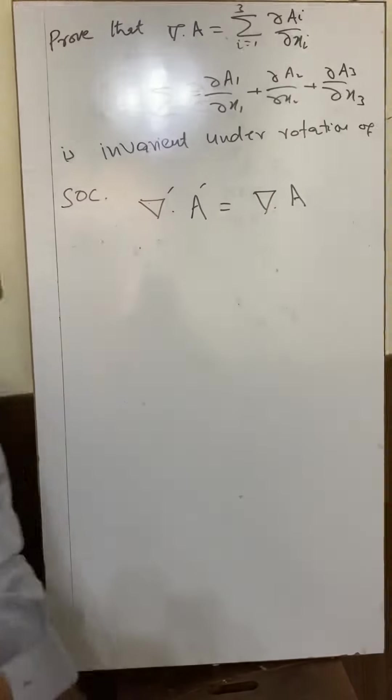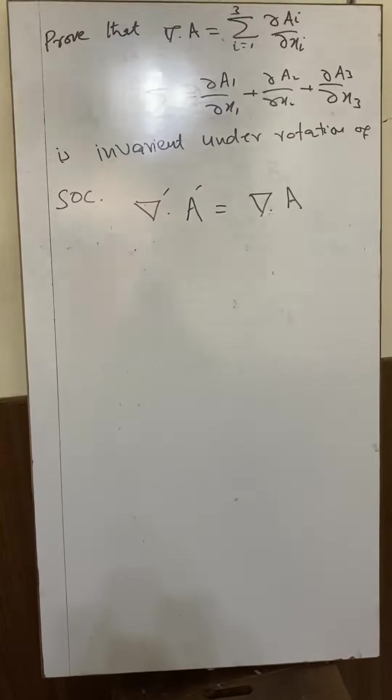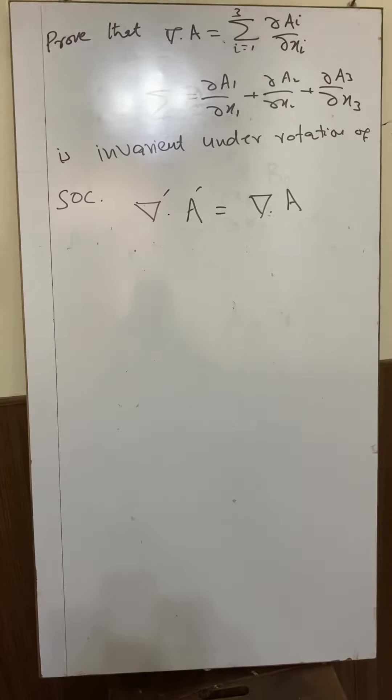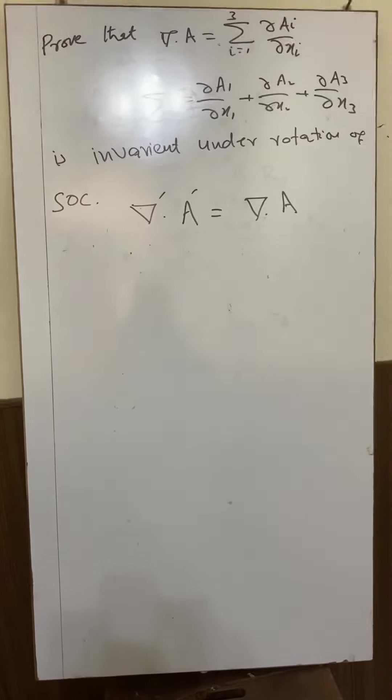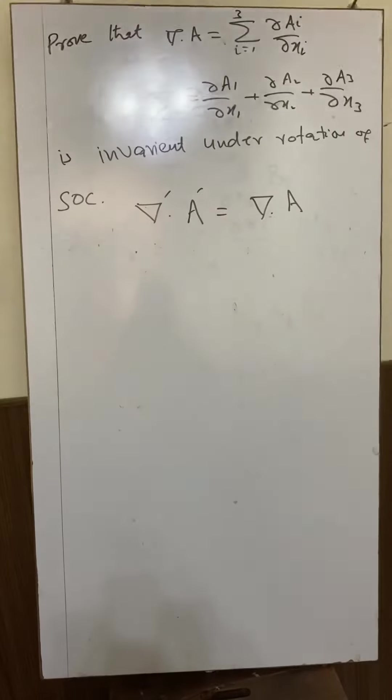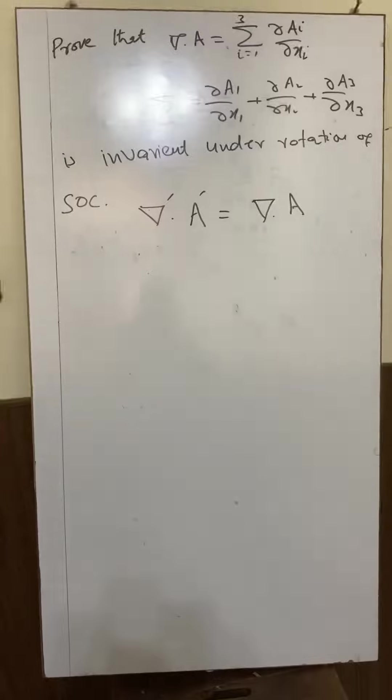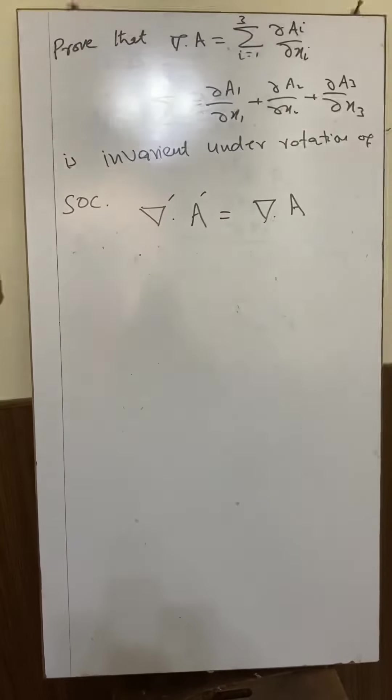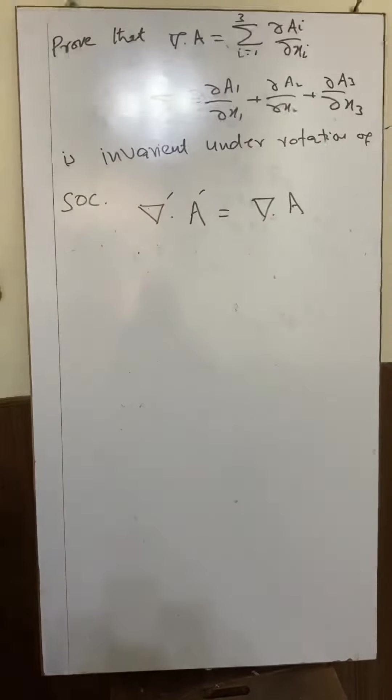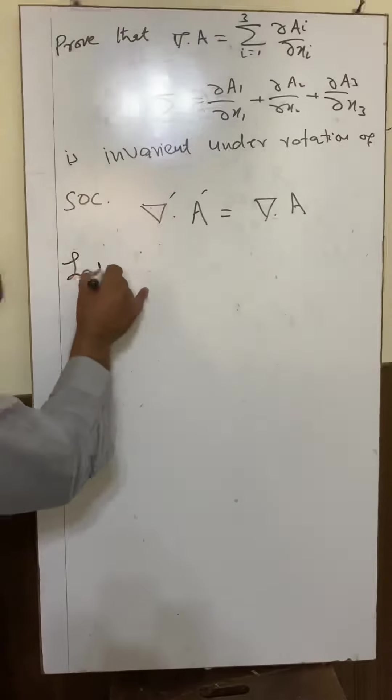Del prime is the del operator after rotation of the coordinate system, A prime is the vector after rotation, and unprimed represents these before rotation of the coordinate system. To prove it, we assume that